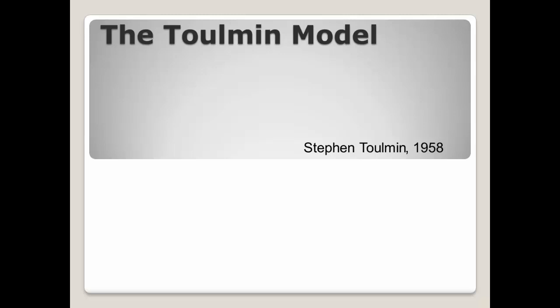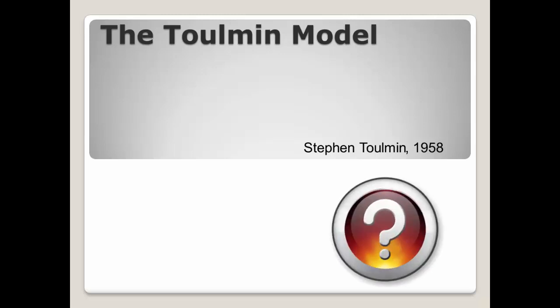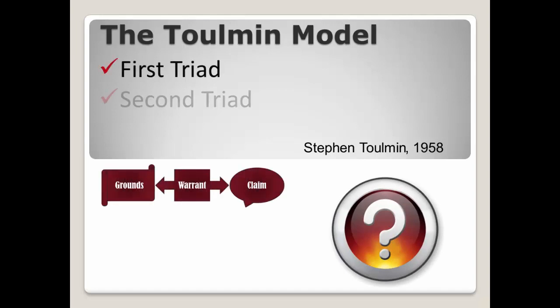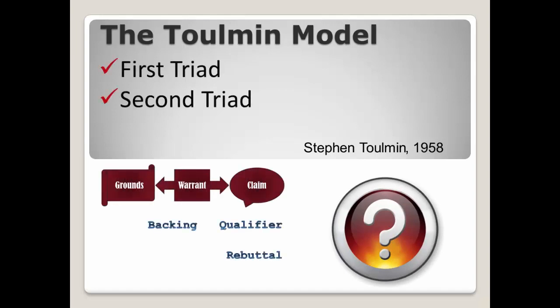Understanding this model will help you not only identify the strengths and weaknesses of others' arguments, but may help you develop and strengthen the arguments you make. This video lecture focuses on the elements in the Toulmin model in both the first and the second triads. Some of the wording may differ based upon the textbook or instructor, and some of the visual diagrams will vary as well, but the basic concepts are the same.